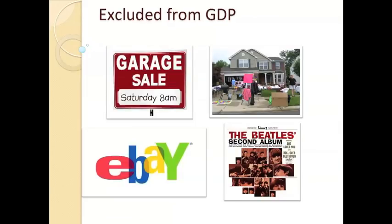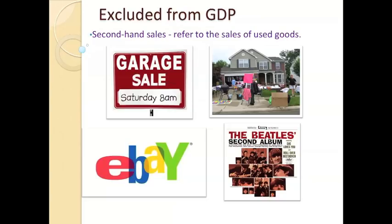When I first moved to Georgia, I noticed that at the beginning of every month there were a lot of garage sales going on. These yard sales are selling things that have typically already been sold one time. So we exclude what we call second-hand sales because these products have already been counted once, and to count them again would be double counting. If you buy a Beatles album that was produced in the 1960s at a garage sale, it wouldn't count towards this year's GDP because it was already counted once. Some people run their business on eBay — if they're selling brand new products in the market, that would count towards GDP. But a used product would not. Again, the exclusion of second-hand sales from GDP.